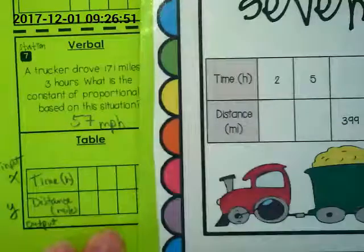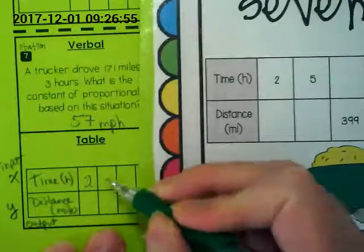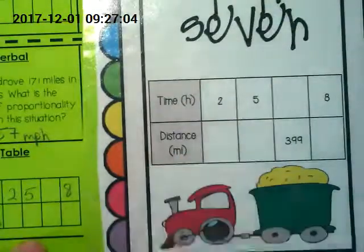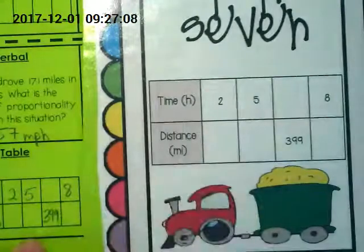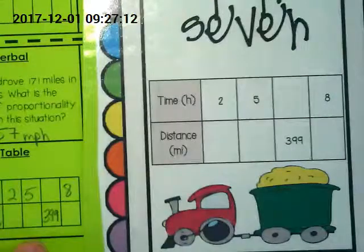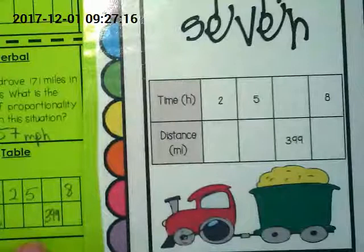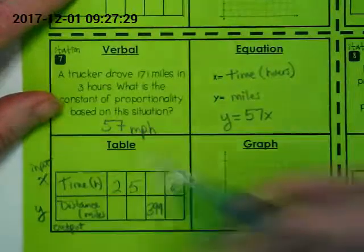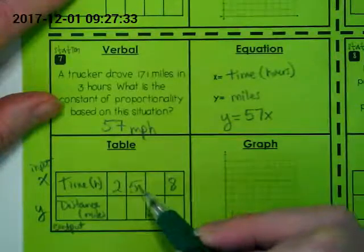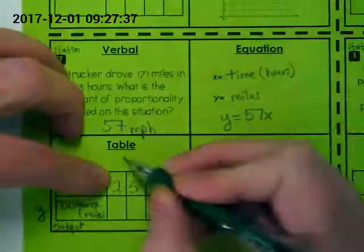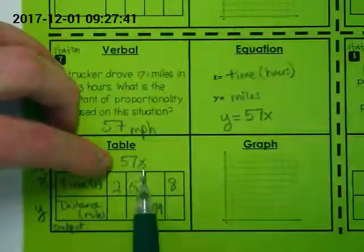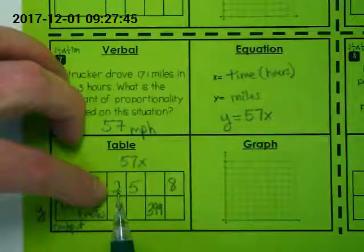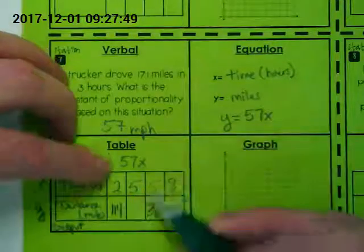And it's giving us some numbers that we can just fill into the table. We've got 2 and 5, and then it's also giving us 8 on the input and an output of 399. We're not looking for a change between this to this and this to this. We're looking at, if I have 2 hours and my rule is 57 times X, well, what's 57 times 2? 114. And what's 57 times 5?